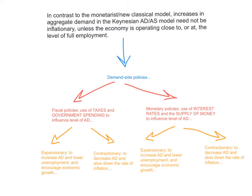In contrast to the monetarist neoclassical model, increases in aggregate demand in the Keynesian ADAS model do not need to be inflationary. As long as there is a lot of spare capacity and the economy is operating on the horizontal section of the aggregate supply curve, increases in aggregate demand will not be inflationary. But as the economy is operating close to or at the full employment level of output, this is when it starts being inflationary.